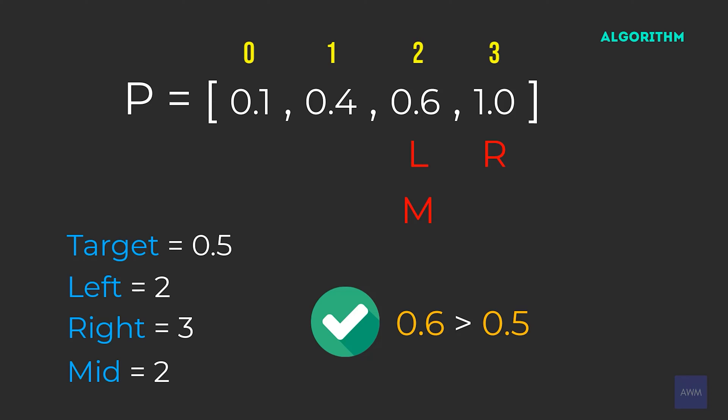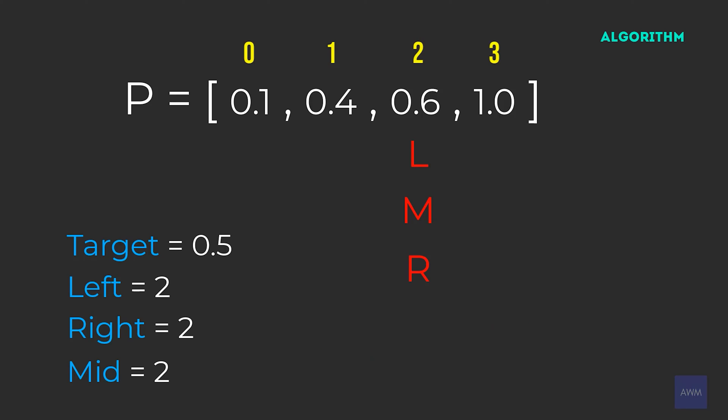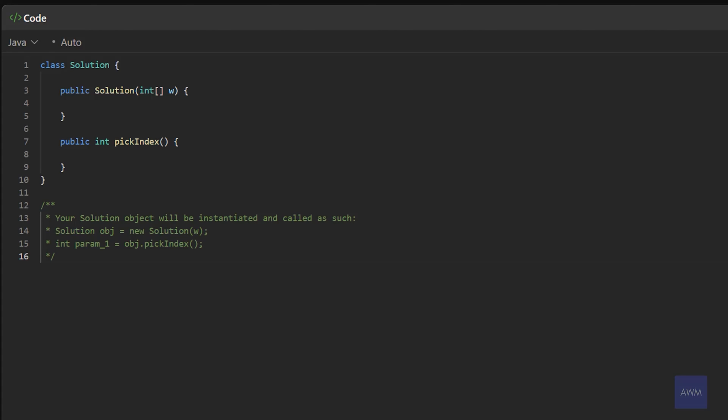We compute mid again: left + (right - left) / 2 = 2. The probability at index two is 0.6, which is greater than our target of 0.5. This means we are in a valid range, so we include this index as a potential answer — right gets reassigned to mid (not mid - 1, as that would exclude index two). Now left and right are both at index two, so we're done. The random index we return is two, which had a 20% chance of being chosen.